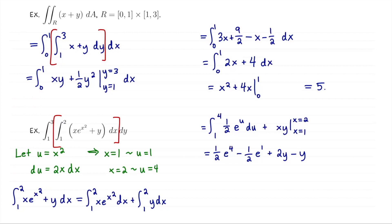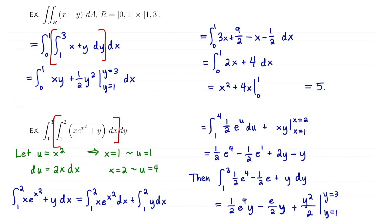All of that was the inside integral. Now we move to the outside integral: integrate from 1 to 3 the quantity (1/2)e⁴ - (1/2)e + y with respect to y. Anti-differentiating with respect to y gives (1/2)e⁴·y - (e/2)·y + y²/2, evaluated from y = 1 to y = 3. I'll let you finish that — it's just a question of plugging in y = 3 and then subtracting off y = 1.